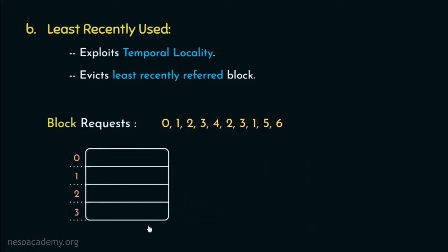Pseudo LRU or PLRU is the next cache replacement policy. 'Pseudo' means false, and as the name suggests, this policy generates approximate measures for replacements — instead of strictly following LRU, we follow an approximation of it. Let's understand the concept with the help of an illustration. Suppose we have a fully associative cache with 8 lines. In PLRU, in order to keep track of the order of access, we use some bits.